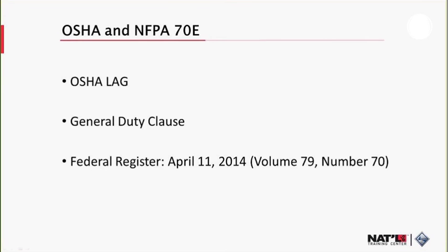Because OSHA has not adopted through rulemaking the requirements of a more recent edition of 70E, those requirements have not become OSHA standards. However, a national consensus standard can sometimes be relevant to a General Duty Clause citation, in the sense that the consensus standard may be used as evidence of hazard recognition and the availability of feasible means of abatement. The General Duty Clause, Section 5(a)(1) of the OSHA Act, is violated if an employer has failed to furnish a workplace free from recognized hazards causing or likely to cause death or serious physical harm. The General Duty Clause is used where there is no standard that applies to the particular hazard involved.